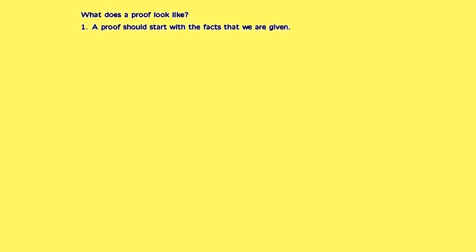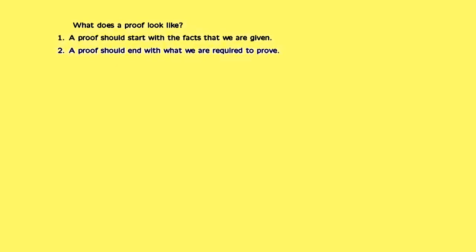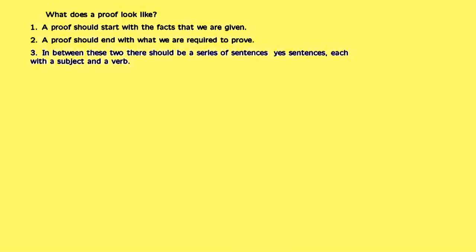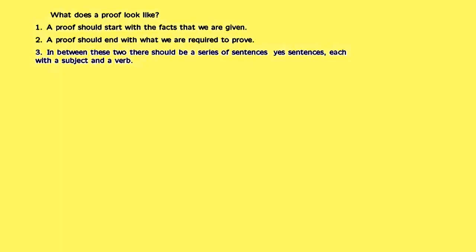In pure mathematics we start with a set of axioms. From these axioms, we use logic to prove lemmas, propositions and theorems. And the proofs need to be watertight arguments. What does a proof look like? A proof should start with the facts that we are given. A proof should end with what we are required to prove. In between these two there should be a series of sentences — yes, sentences — each with a subject and a verb.